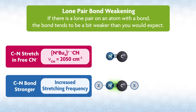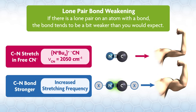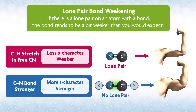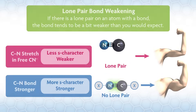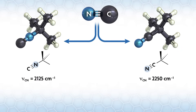I don't want to go into all the causes and consequences of the effect here — that would require its own video — but it's pretty much what it sounds like. If there's a lone pair on an atom with a bond, the bond tends to be a bit weaker than you would expect. Briefly, the reason is that the lone pair tends to monopolize the S character on the atom, weakening the other bonds. If you put something on the lone pair, that frees up S character and the bond gets stronger. Effectively, for these compounds, you're taking cyanide and adding a tert-butyl cation to one side or the other, which strengthens the CN bond and increases the stretching frequency.